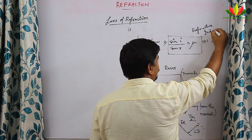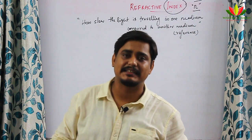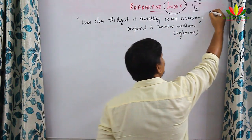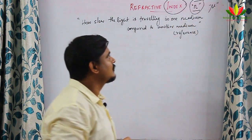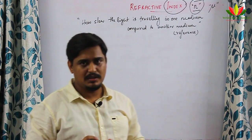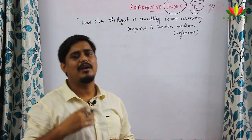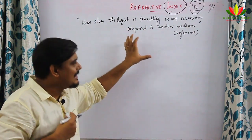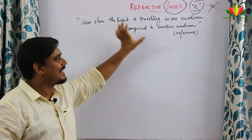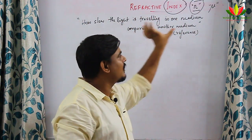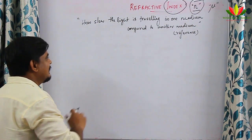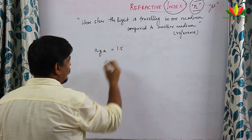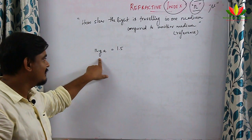Refractive index is represented by the letter n (or sometimes μ). It is a ratio — an index that gives us an idea of how fast or how slowly light is traveling in one medium compared to another reference medium. For example, if n of glass with respect to air (n_ga) = 1.5...